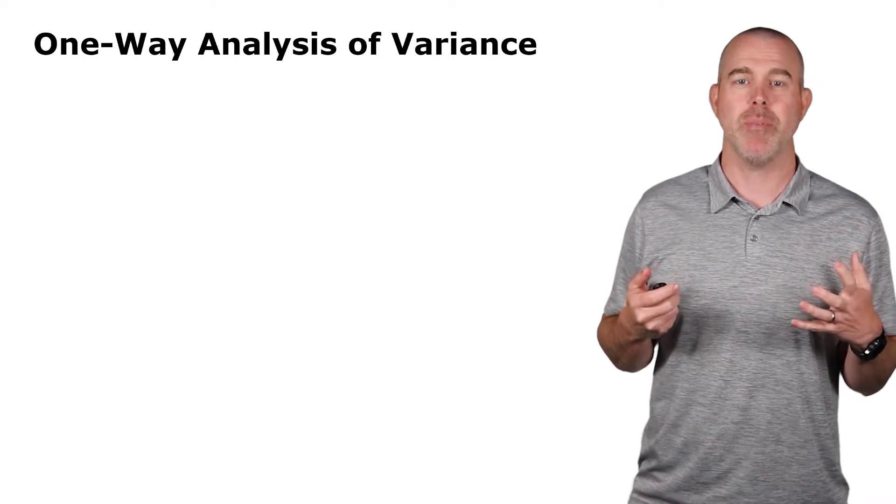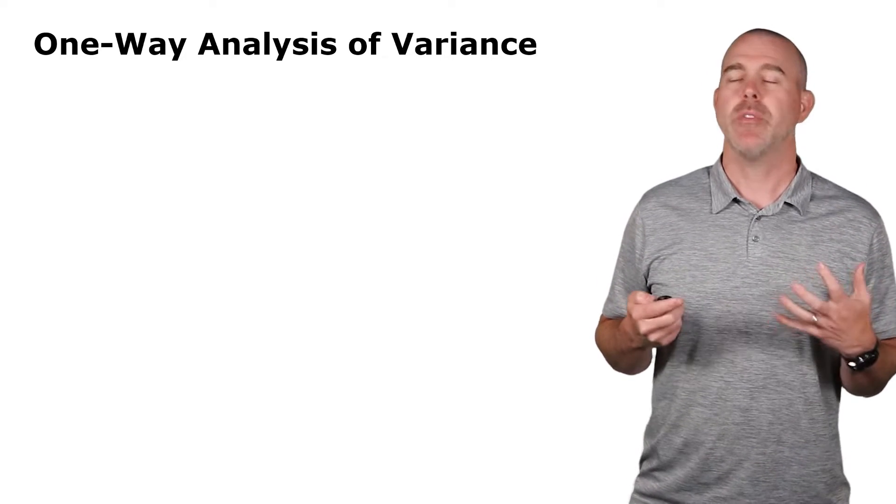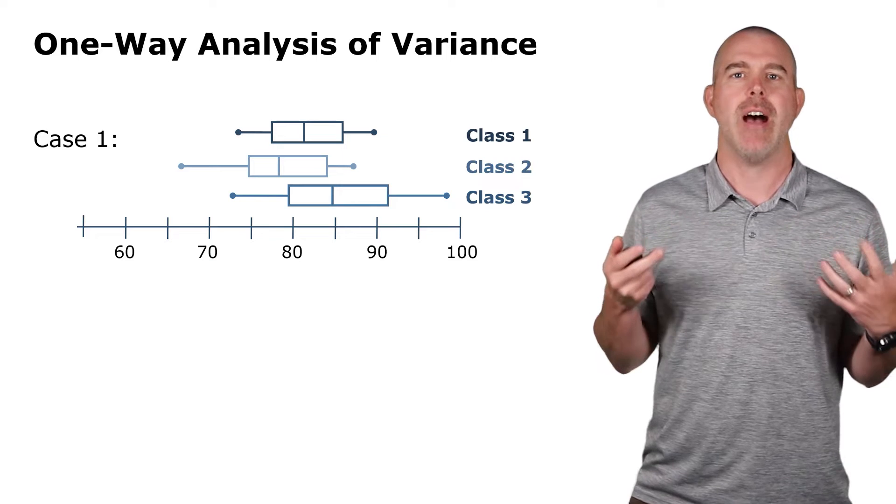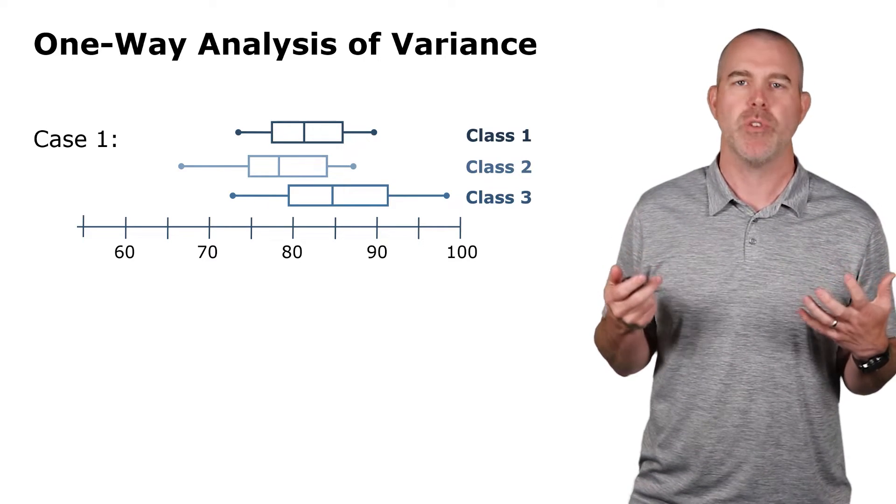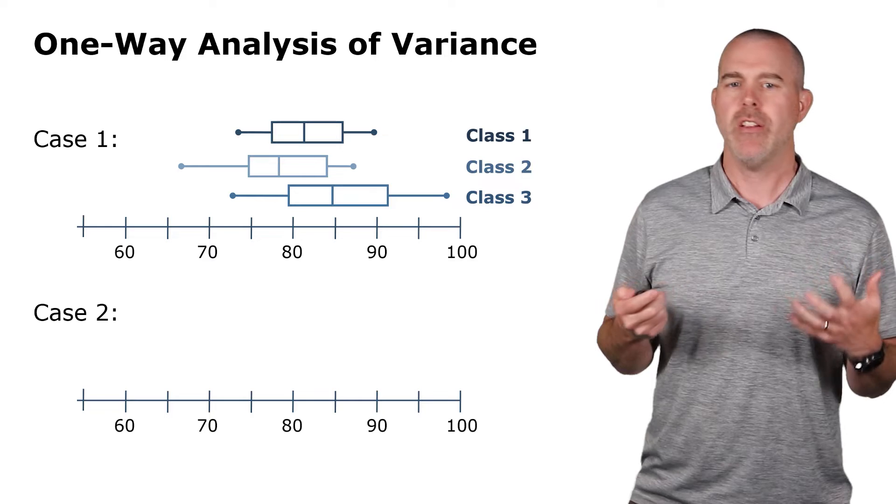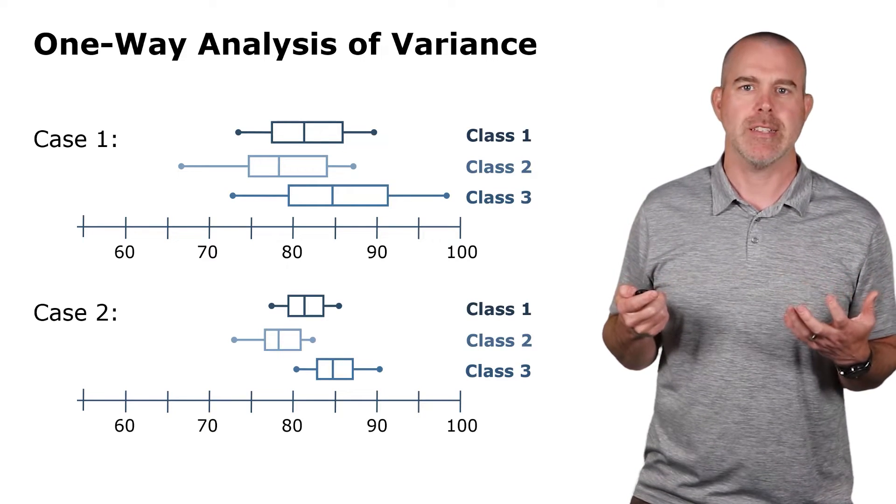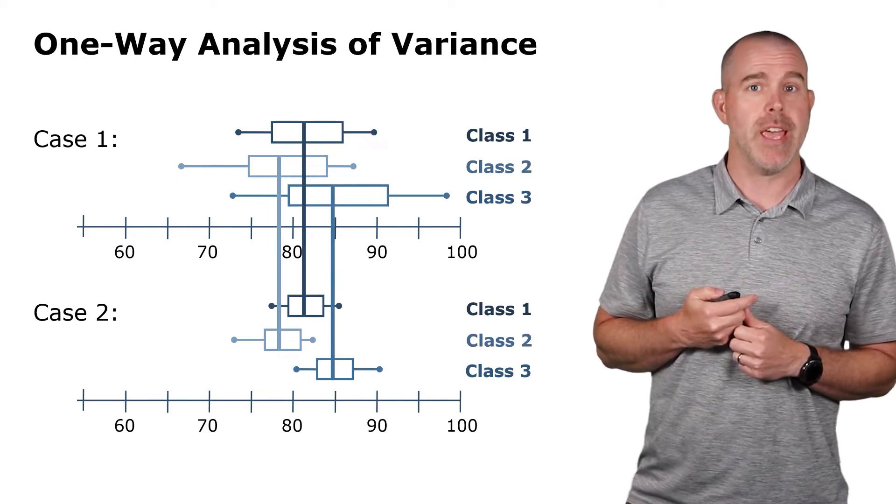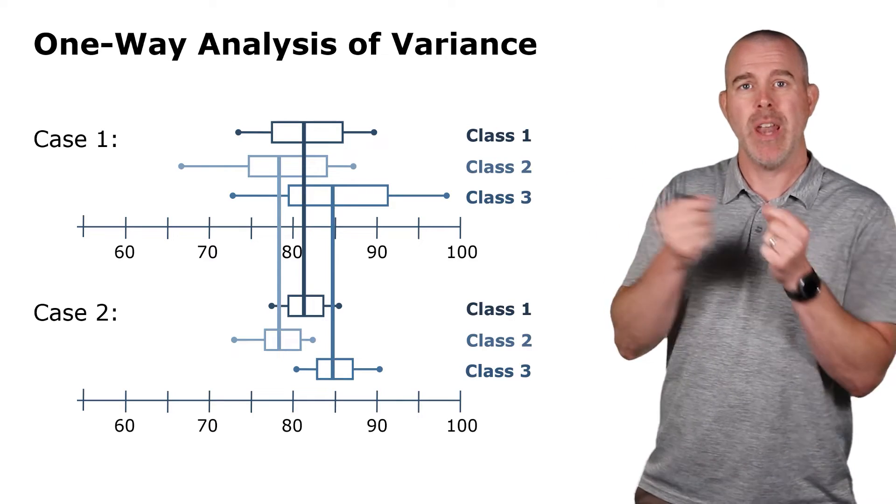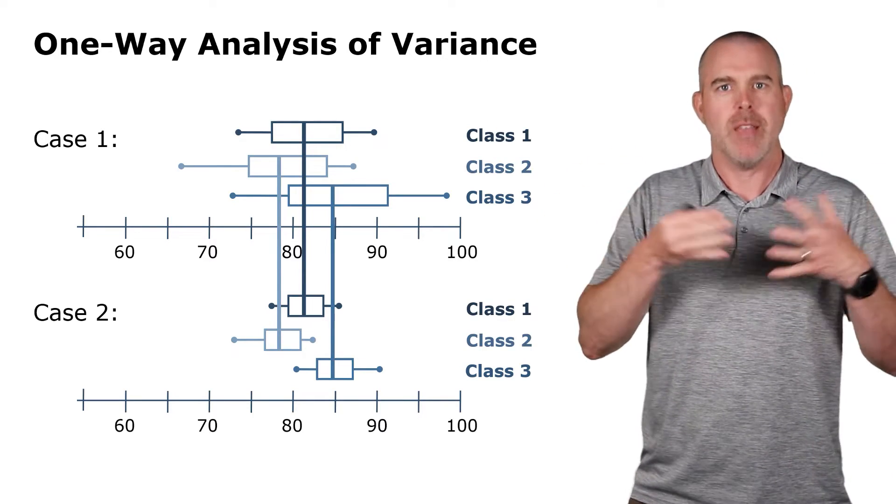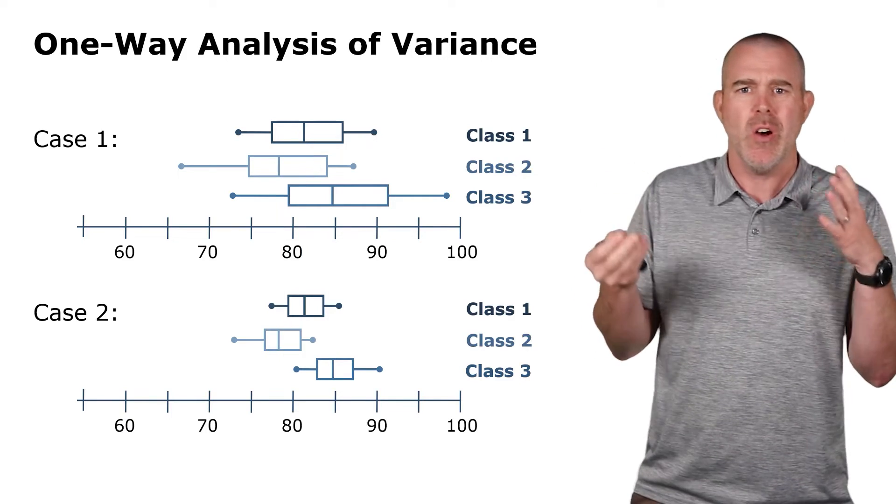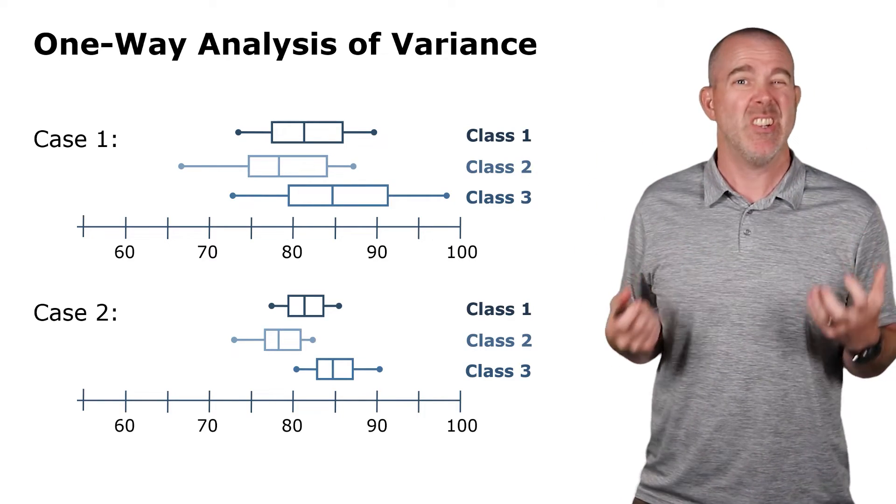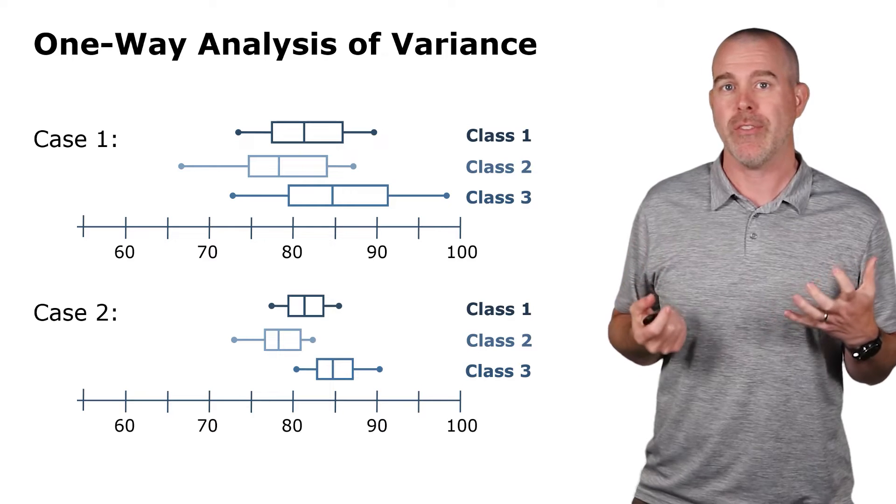I'm going to use some theoretical examples to help explain how this works. Suppose I have some exam scores, and I've got case one here, three different classes, and these box plots demonstrate their distribution of exam scores. And then here's case two, again, three different classes. Now if you look closely, their means, or their medians, are actually the same. However, the classes in case one appear to have more variance, more spread out. And so it's hard to know, are they really different or not? Versus in case two, they're much more condensed, and there does appear to be a difference between the different classes.